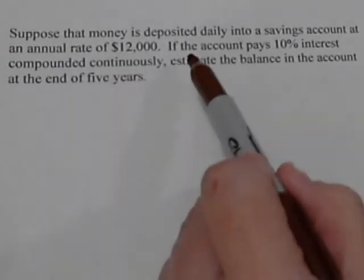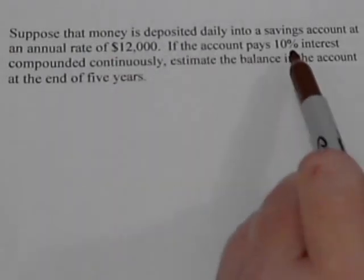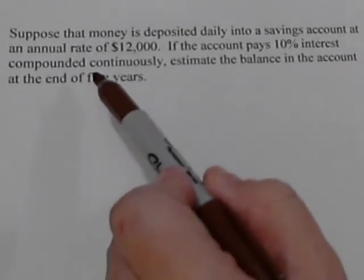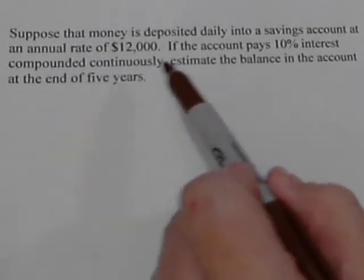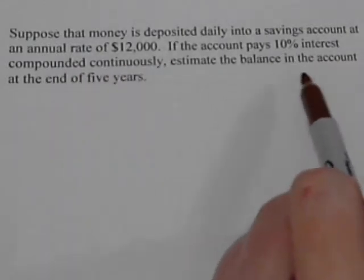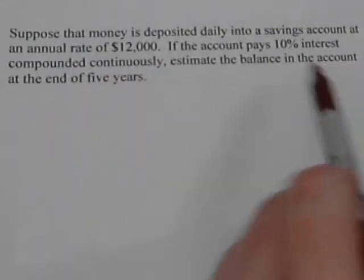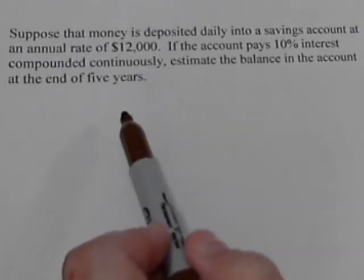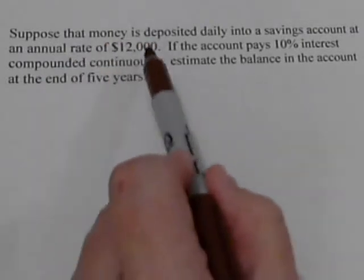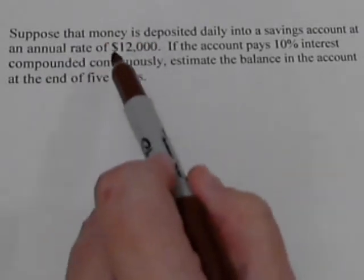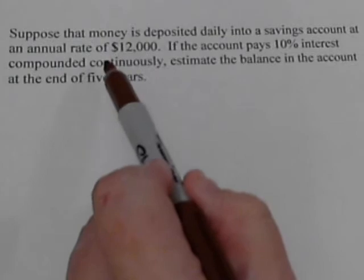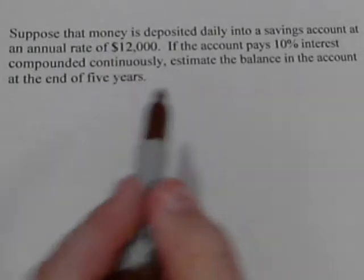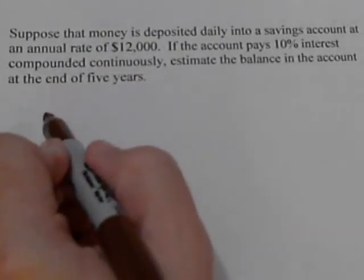We have an account that pays ten percent interest compounded continuously, and we want to figure out what's our total amount at the end of five years. Since we have money going in at a certain rate, if we know the rate and we want to find the total amount, we're going to take an integral.